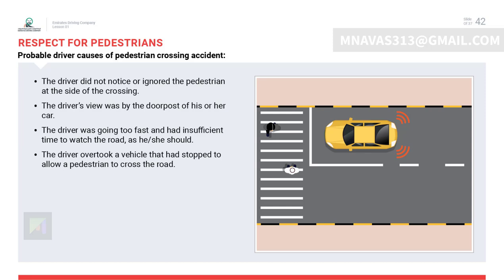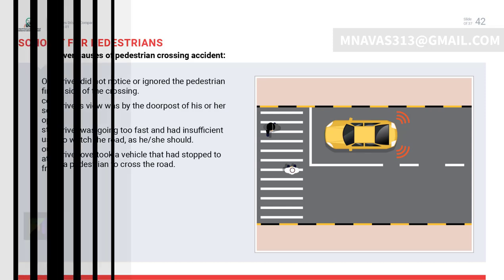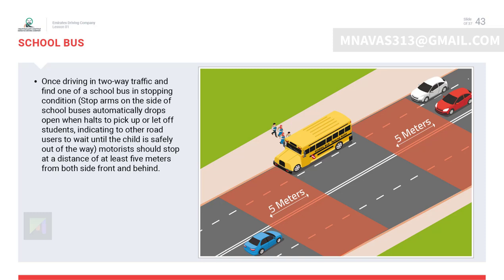Respect for pedestrians: all drivers must give priority to pedestrians to avoid pedestrian accidents. Regarding school buses: in two-way traffic, when a school bus is stopped, its stop arms automatically drop open to indicate that other road users should wait until the child is safely out of the way. Motorists must stop at a distance of at least five meters from both the front and behind of a school bus.